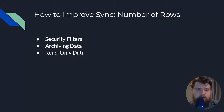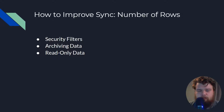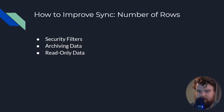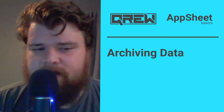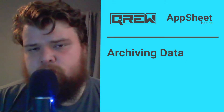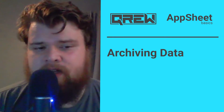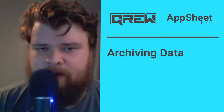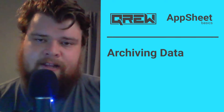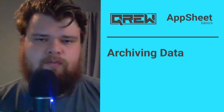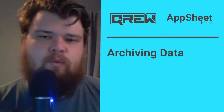One thing that could be an option for you is archiving your data. You probably don't need to edit older data and you probably don't even need to see it most of the time. You can use security filters to filter out data beyond a certain point, but if you're using something like a Google Spreadsheet you might have a maximum cell count. If that's the case, archiving data is a great option. To archive data, take the data you want to archive — usually data that's older than a certain point — and move it to a new sheet.